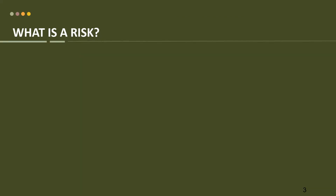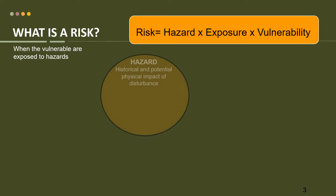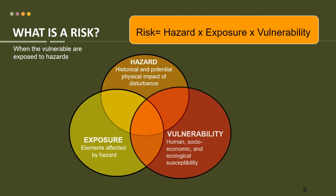The alternative definition of risk is when the vulnerable are exposed to the hazards. So risk is equal to hazard times exposure times vulnerability. Where hazard is the historical and potential physical impact of a disturbance — it can be natural or human-induced as we have earlier discussed. Exposure is when the elements are affected by the hazard. And vulnerability refers to human, socio-economic, and ecological susceptibility.